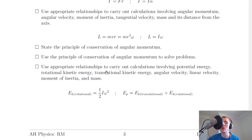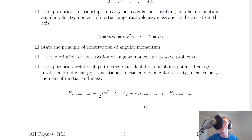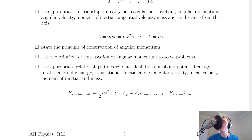Lastly for section 3, use appropriate relationships to carry out calculations involving potential energy, rotational kinetic energy, translational kinetic energy, angular velocity, linear velocity, moment of inertia and mass. For rotational kinetic energy: Ek rotational equals a half i omega squared. For translational kinetic energy use Ek equals a half mv squared. Gravitational potential energy Ep equals mgh. If you've got an object rolling down a hill, by conservation of energy the gravitational potential energy at the top equals the translational kinetic energy plus the rotational kinetic energy, because the object is linearly moving down the slope while also rotating.